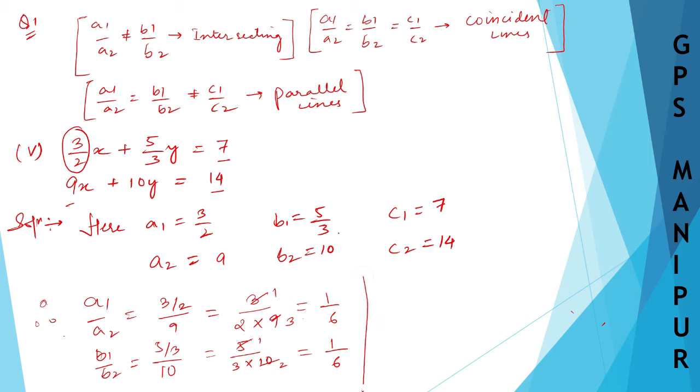Let me write down here. C1/C2 equals 7 divided by 14. 7 divided by 14 is 1/2.